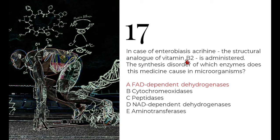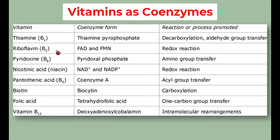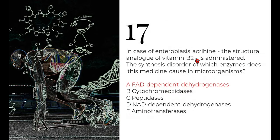Question 17: in enterobiasis, acrichine — a structural analog of vitamin B2 — is administered. The synthesis disorder of which enzyme does this cause? Vitamin B2 is riboflavin, whose coenzyme forms are FAD (flavin adenine dinucleotide) and FMN (flavin mononucleotide). These participate in redox reactions. Since riboflavin's coenzyme forms are FAD and FMN, the enzymes impaired are FAD-dependent dehydrogenases.